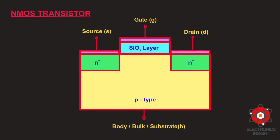Between the two heavily doped N-plus source and drain regions, we have a P-type diffused body. Here, there will be a formation of a channel, and we are going to see how channel formation is induced by the applied gate voltage. Above the oxide layer, a polysilicon layer is deposited which forms the gate. Because of the insulation layer, the gate and the channel are electrically isolated, and hence no current flows from the gate to the channel or vice versa.